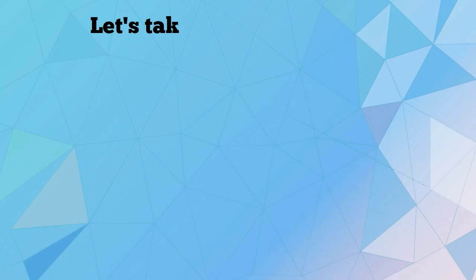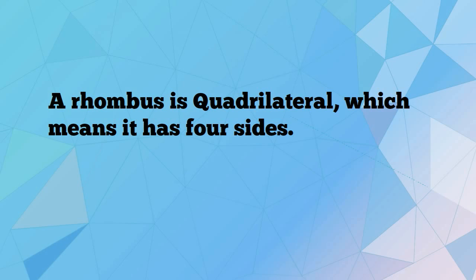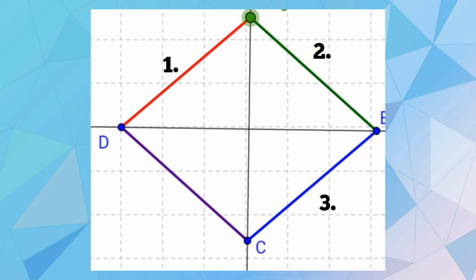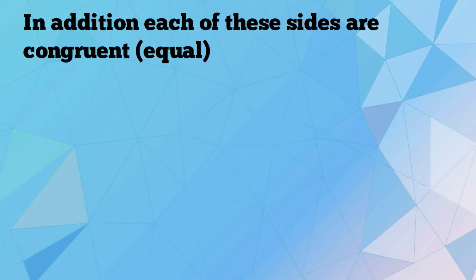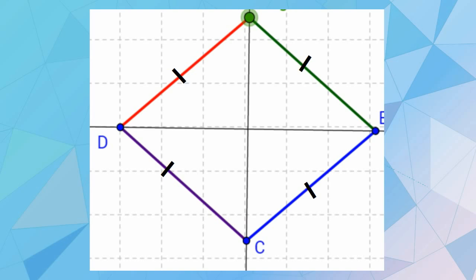Let's take a look at the properties of a rhombus. A rhombus is a quadrilateral, which means it has four sides. In addition, each of these sides are congruent or equal. The opposite sides of a rhombus are parallel.